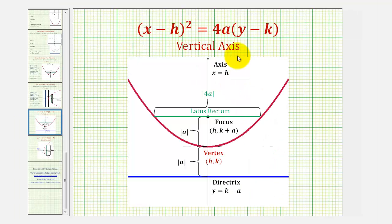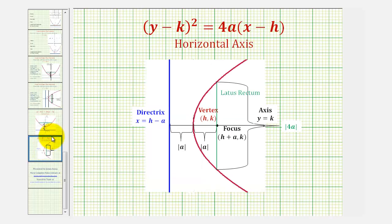For example, if the equation fit the form where the x part was squared and the y part was to the first power, we'd have a vertical axis, meaning the parabola would open up or down. But in our case, our equation fits the form where the y part is squared and the x part is to the first, so we'll have a horizontal axis, meaning the parabola will open to the right or left based upon the sign of a.